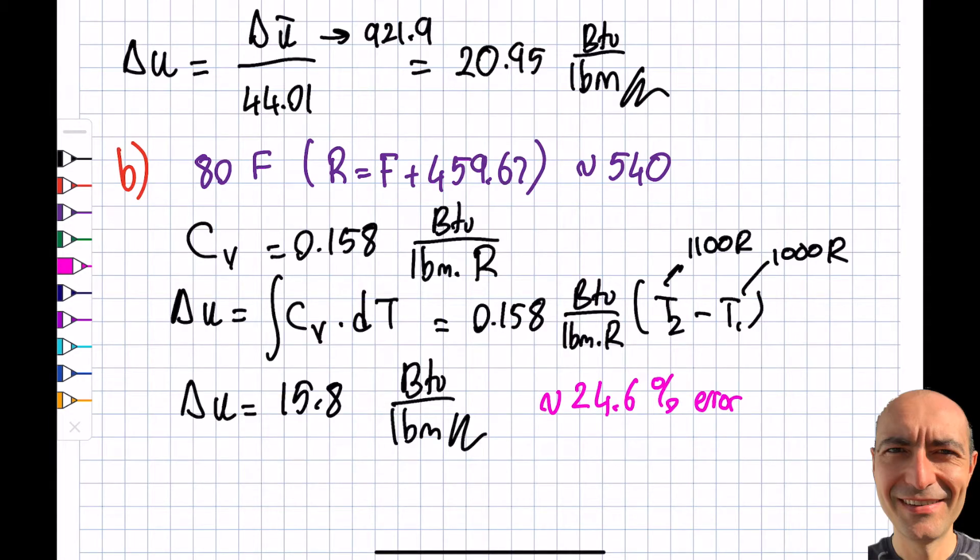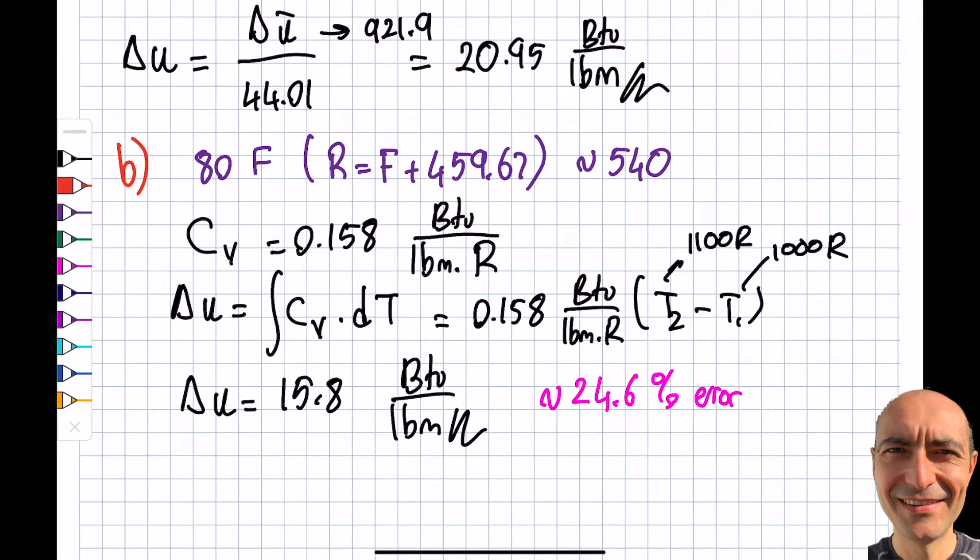I want to highlight this is not always going to be this much of an error. If I go up in temperature, this error will go up. If I go down and the temperature I'm working with is closer, then I will have less error because my cv will in actuality be similar to 0.158. The temperature is the name of the game here. It really depends. So due to the significant temperature difference, I get a pretty bad final answer.